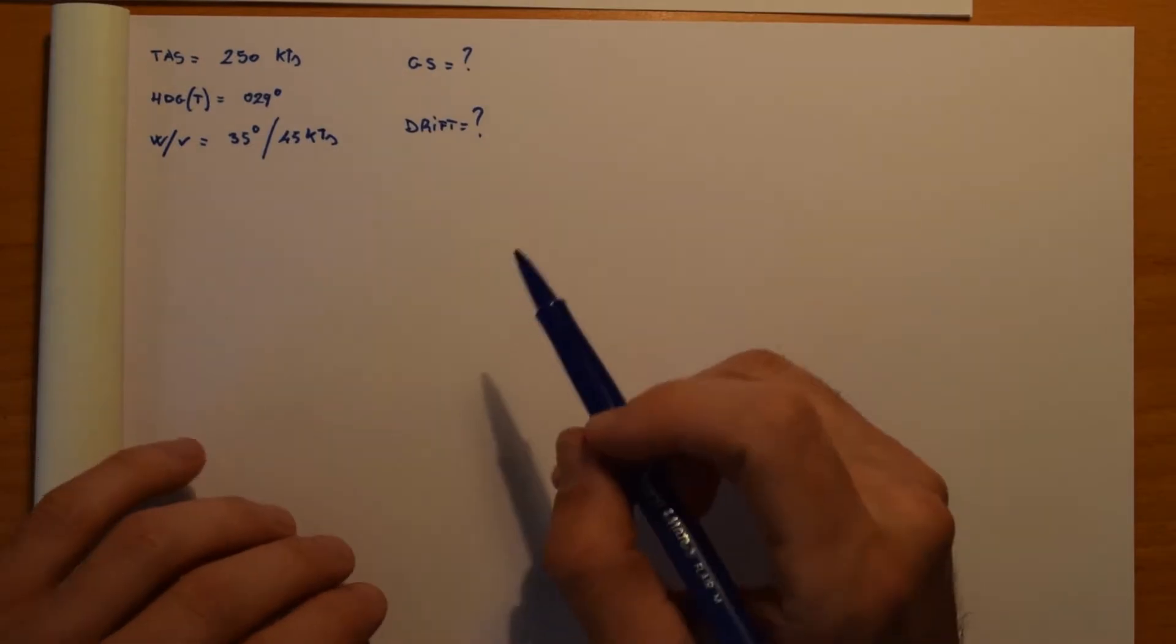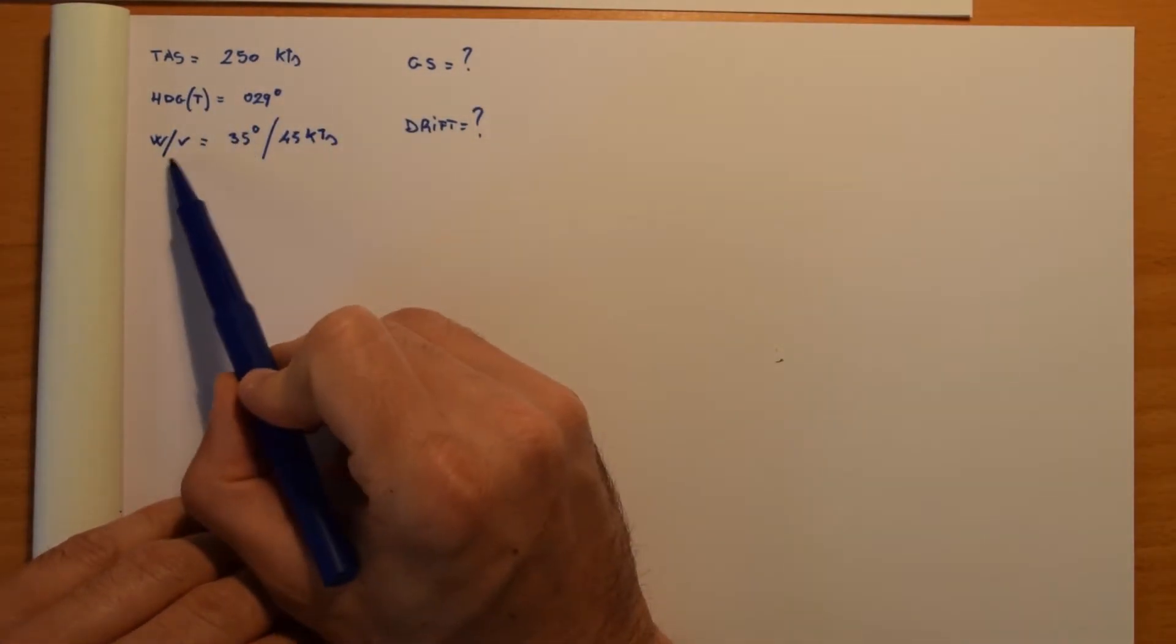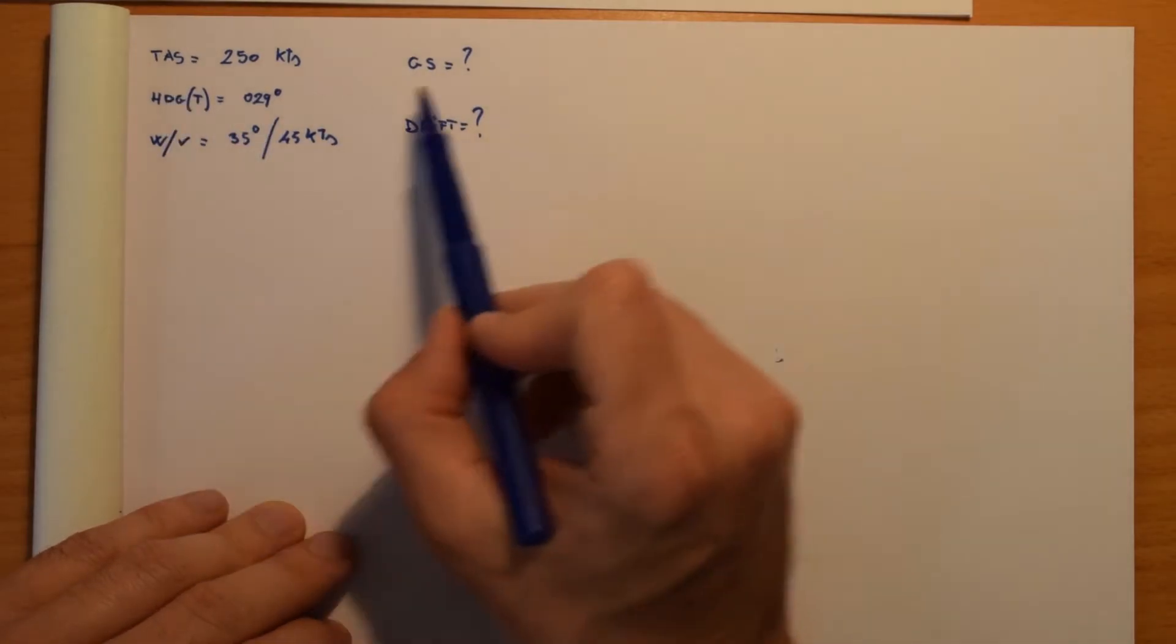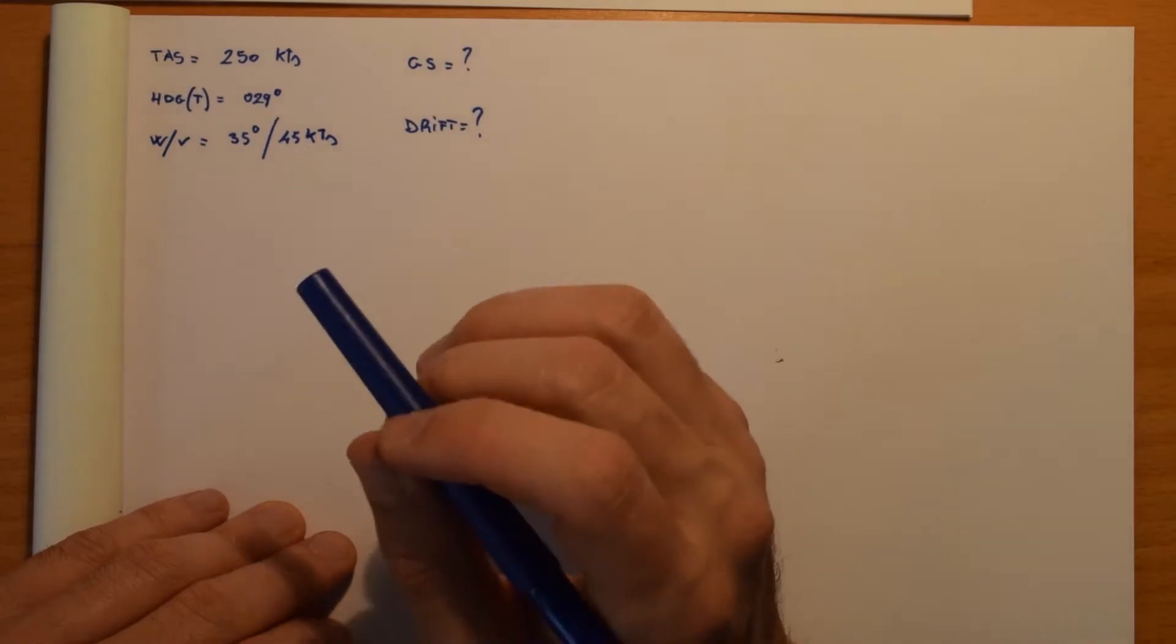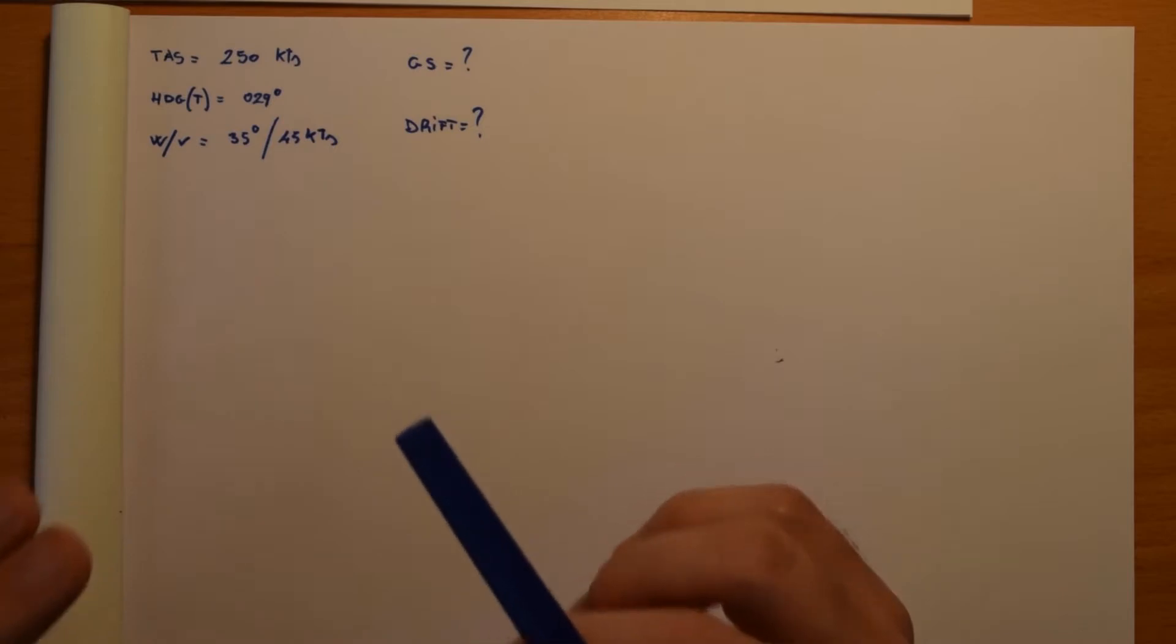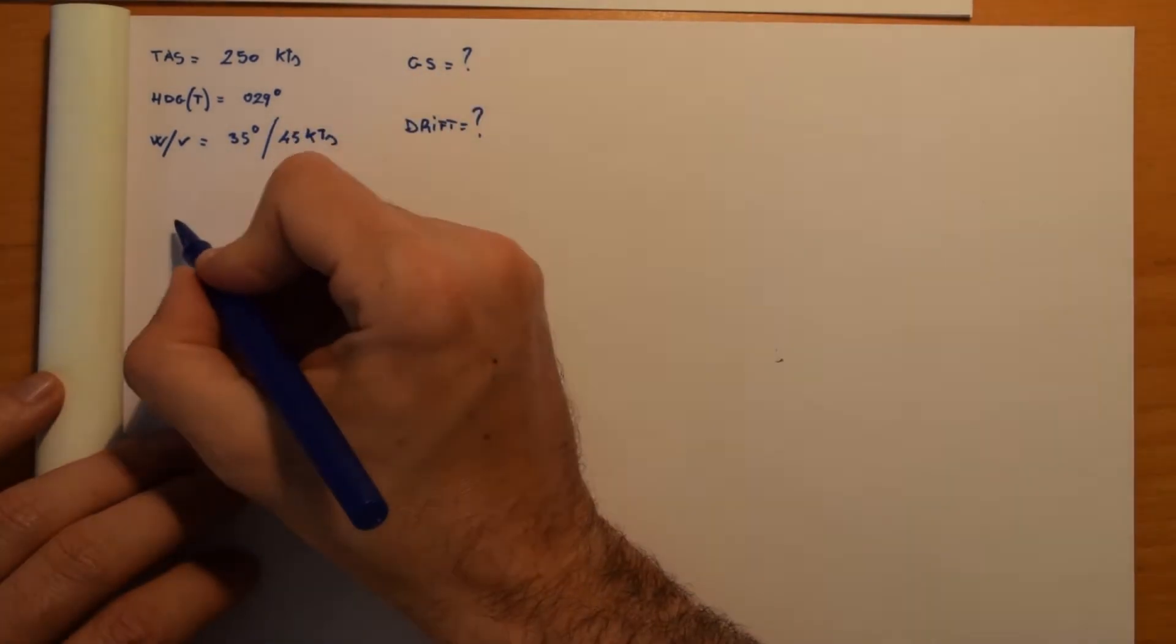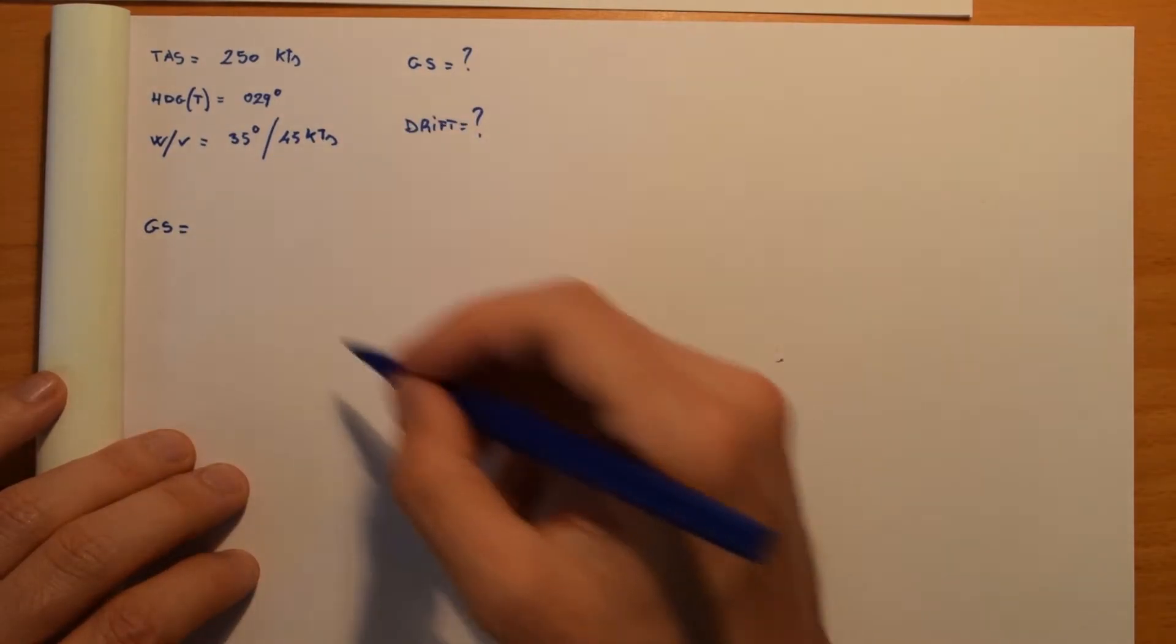I really recommend you to practice this kind of exercise and solve this kind of exercise using trigonometry. In this kind of exercise, when you are given heading, true wind vector, and TAS, and they're asking you ground speed and drift, I will explain you a formula that is going to help you a lot.